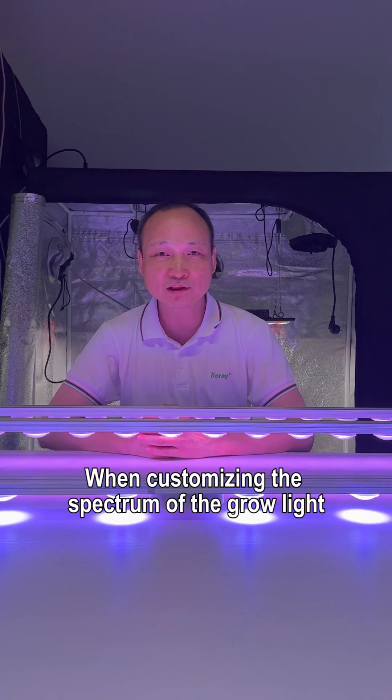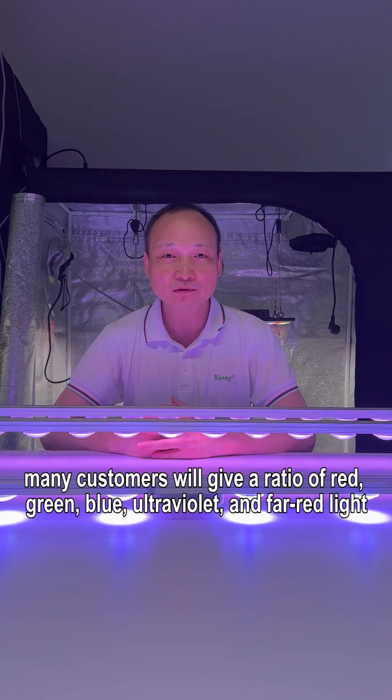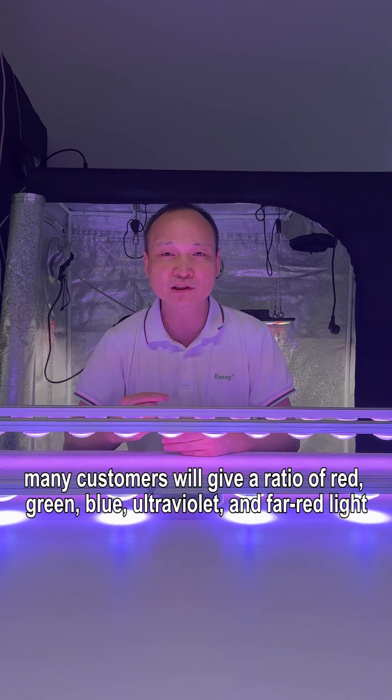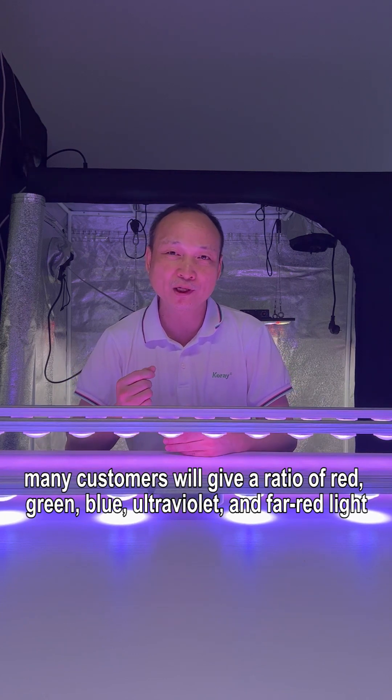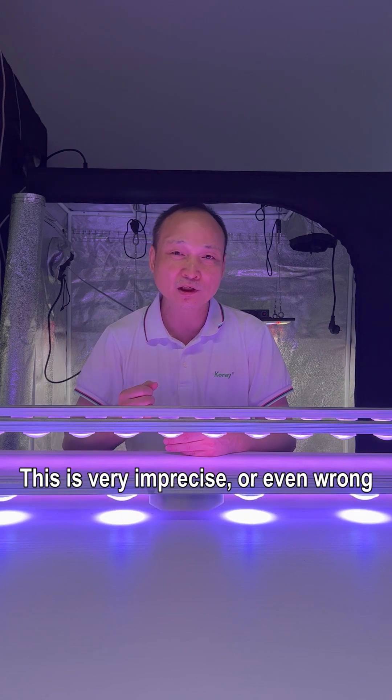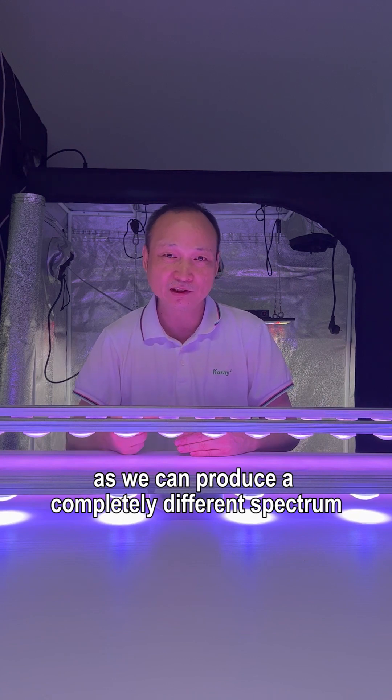When customizing the spectrum of grow lights, many customers provide a ratio of red, green, blue, ultraviolet, and far-red light. This is very imprecise or even wrong, as we can produce completely different spectra with exactly the same proportions.